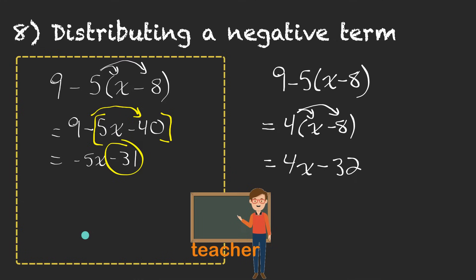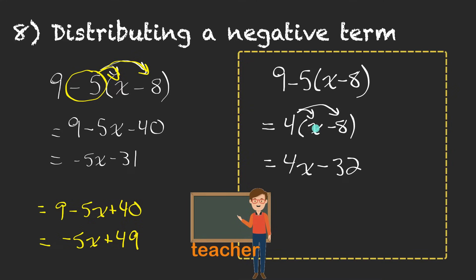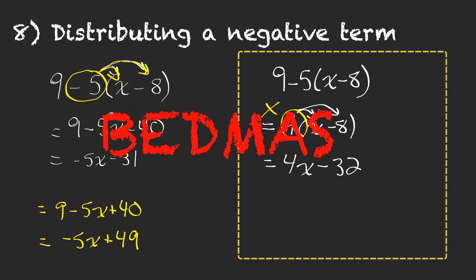That's not even how I would do this question. I would distribute the negative 5, and then that would allow me to get rid of the brackets all in one step. So you'd have 9, and then negative 5 times x is negative 5x, and negative 5 times negative 8 is positive 40. So when you collect your like terms, you'd have negative 5x plus 49. What happened over here? This student didn't follow the correct order of operations. We can't do a subtraction first — this negative 5 is being multiplied by something, so we'd have to do the multiplication before the subtraction. Always remember BEDMAS.